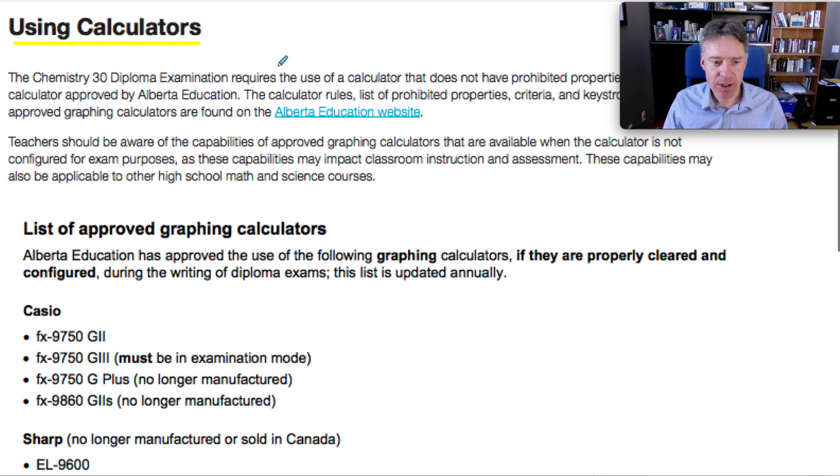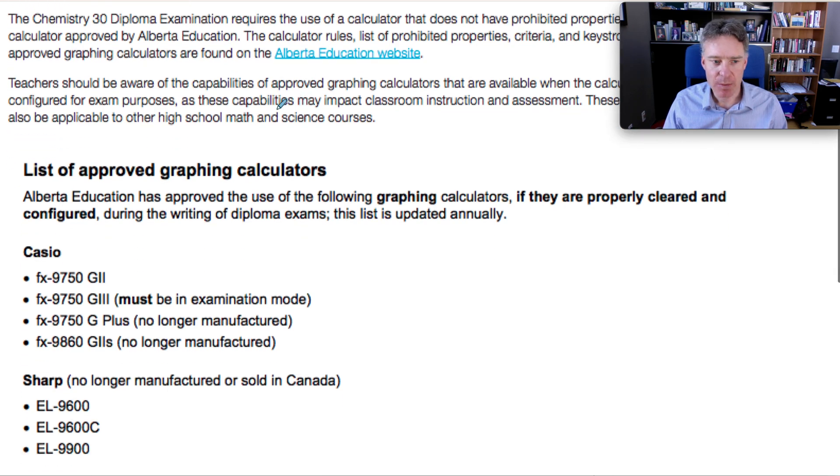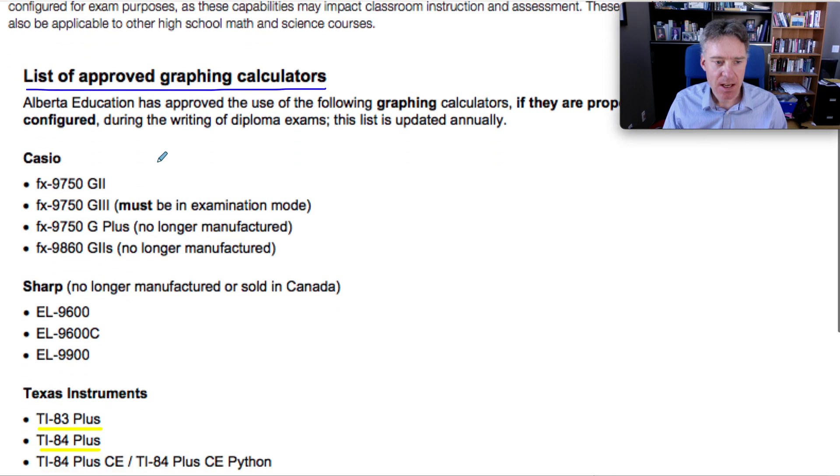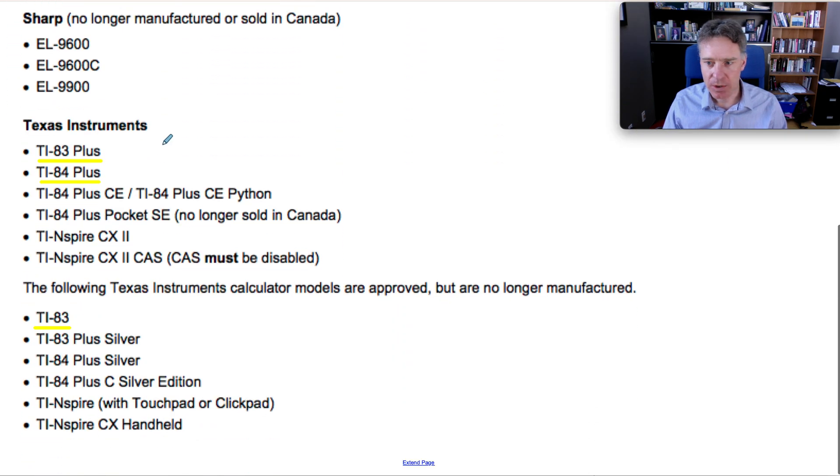Starting to wrap things up, some approved calculators. This is directly from Alberta Ed, so this is relevant for both science and math. The approved list of calculators, or some of the approved, this is not every calculator made. There's a bunch of Casio, Sharp, and most students at the school I teach at have a Texas instrument calculator.